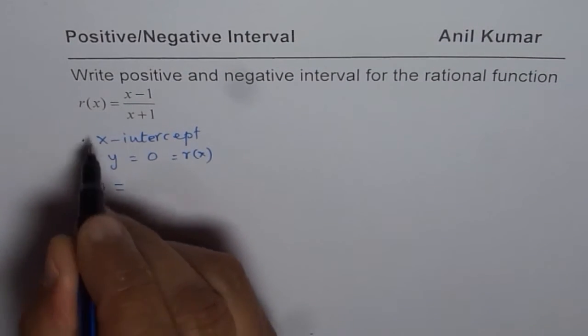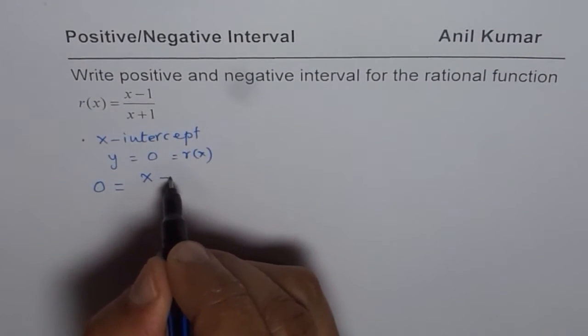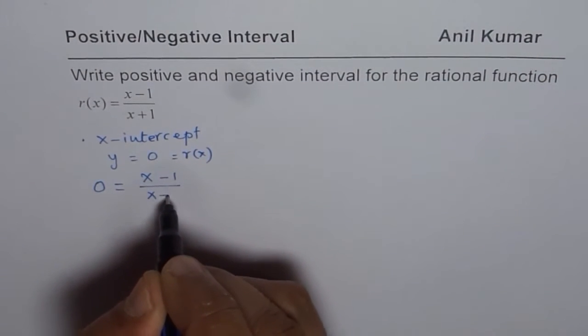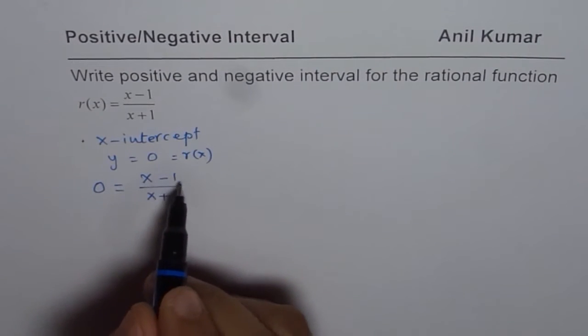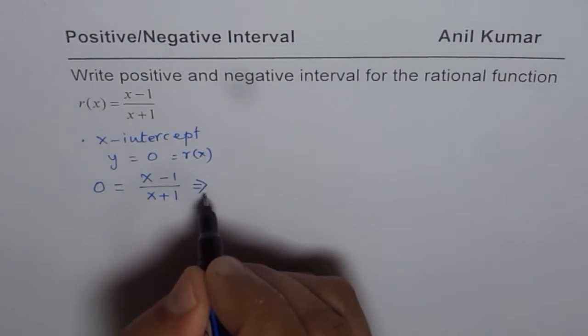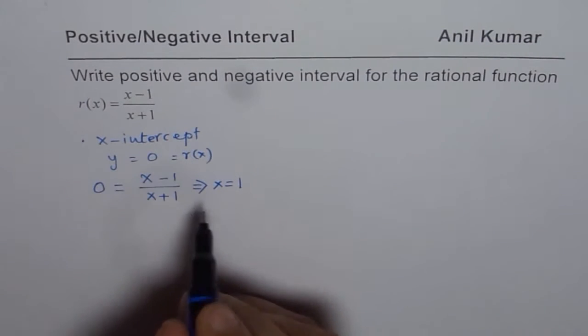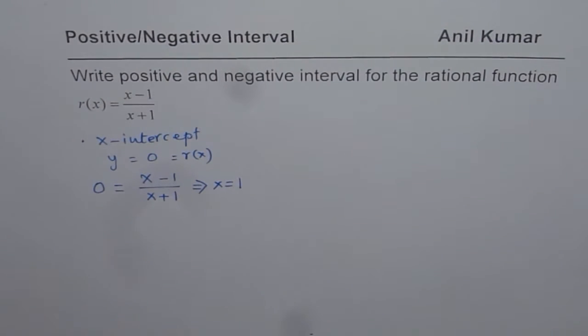So if I equate 0 for r(x), I get 0 equals to x minus 1 over x plus 1 and that is the case when x is equal to 1. That is to say that the x-intercept is at x equals to 1. So we found x-intercept.